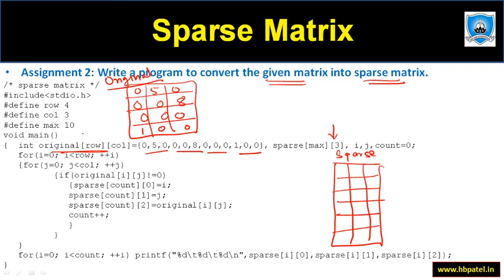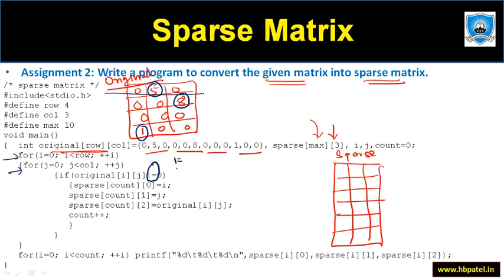From the original matrix, we check whether an element is zero — if it is zero we skip it, because we are only interested in non-zero elements. So we will consider only five, eight, and one. Using two loops — one for row and one for column — if the element is not zero, we process it. For example for five, i equals zero and j equals one.